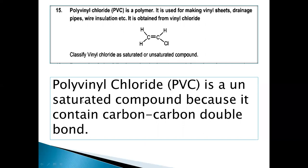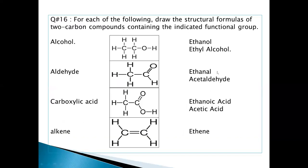Polyvinyl chloride PVC is an unsaturated compound, because it contains carbon-carbon double bond. Next question, if we talk about question number 16, we have four options.